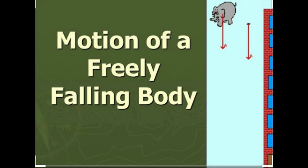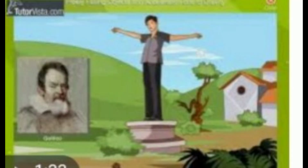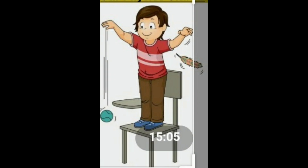Take a large stone and a small eraser, stand on top of a table, and drop them simultaneously from the same height. What do you observe? Now take a small eraser and a sheet of paper, drop them simultaneously from the same height. What do you observe this time? Take two sheets of paper having the same mass — crumple one of the sheets into a ball. Now drop the sheet and the ball from the same height.